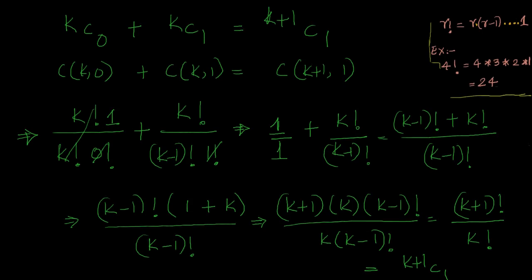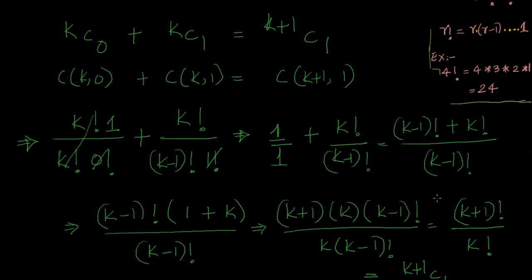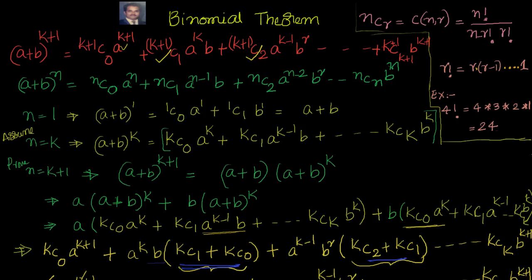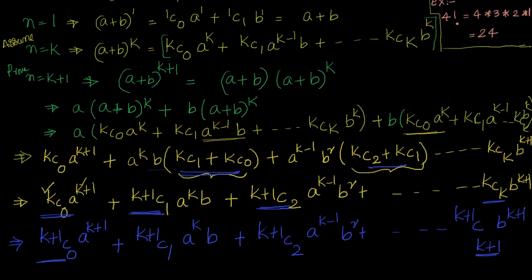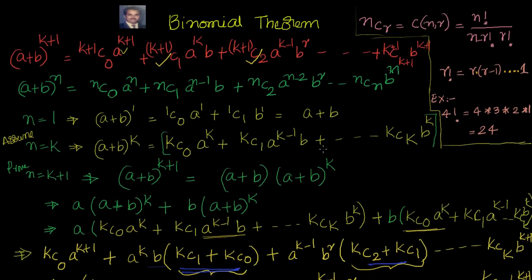Let me summarize: we proved for n equal to 1, assumed for n equal to k, then proved for n equal to k plus 1 by simplifying, adding like terms, and using the combinations property kC1 plus kC0 equals k+1C1. In coming videos, since we now have this proof, we can find the general term, middle term, term independent of x, and coefficient of a particular term.